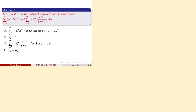First of all, we have a problem with radius of convergence. The radius of convergence is R1 and R2 for two series: summation n=1 to infinity of (-1)^n · x^(n-1), and n=1 to infinity of (-1)^n · x^(n+1) divided by n(n+1).